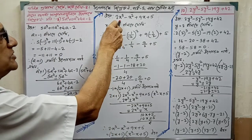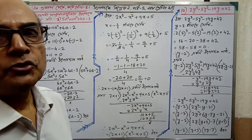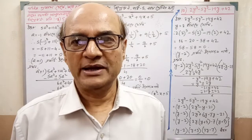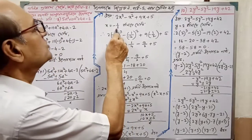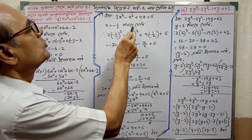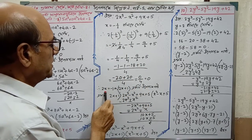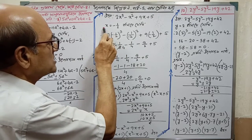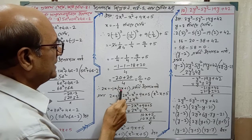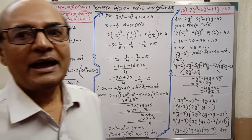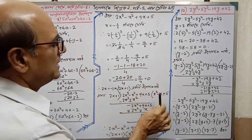This is 2x³ minus x² plus 9x plus 5. The answer is zero when x equals minus 2. Also x equals minus 1 by 2 gives zero for 2x³ minus 1. So considering the factor 2x plus 1, and cos square x equals minus 1.